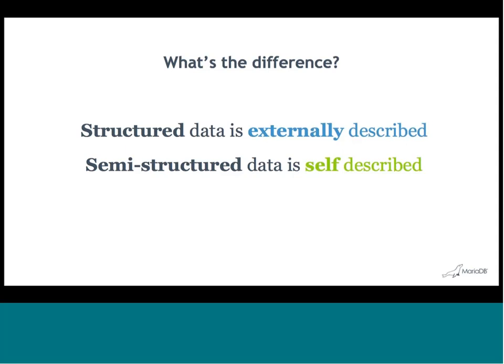I've been tossing around the terms structured and semi-structured. Here's how I think about it: structured data is externally described, meaning a separate schema — a separate physical thing that tells you what your data looks like. Semi-structured data is self-described. Whether you're looking at a JSON document or an XML document, that document not only has the data, it has the metadata. It tells you what the structure is just by looking at it.